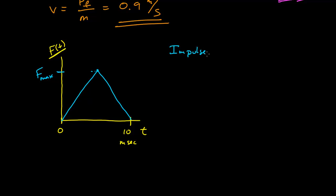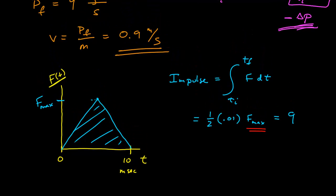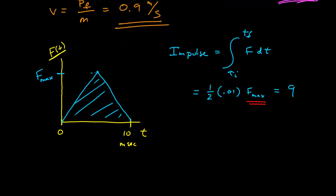The impulse, which is the integral of force dt, is just the area under this curve. That area is a triangle: one half times the base (10 milliseconds = 0.01 seconds) times the height (F_max). We know that equals the total change in momentum of 9 kg·m/s. So F_max = 2 × 9 / 0.01 = 18 / 0.01 = 1800 newtons.